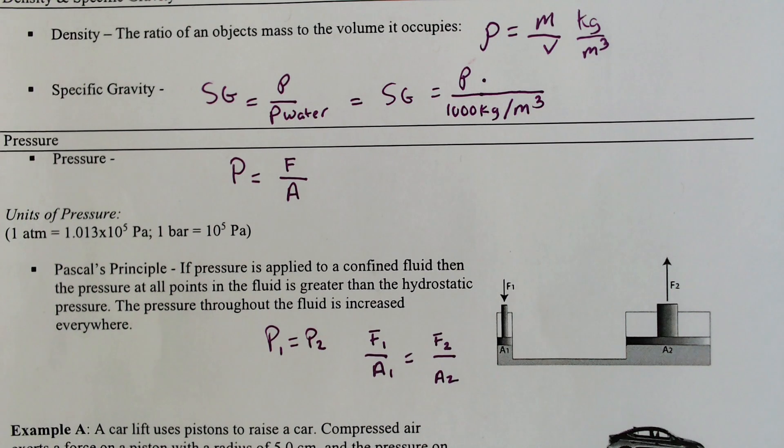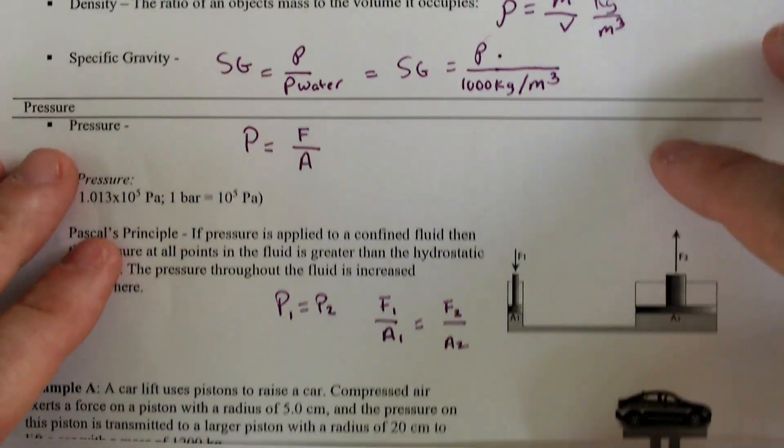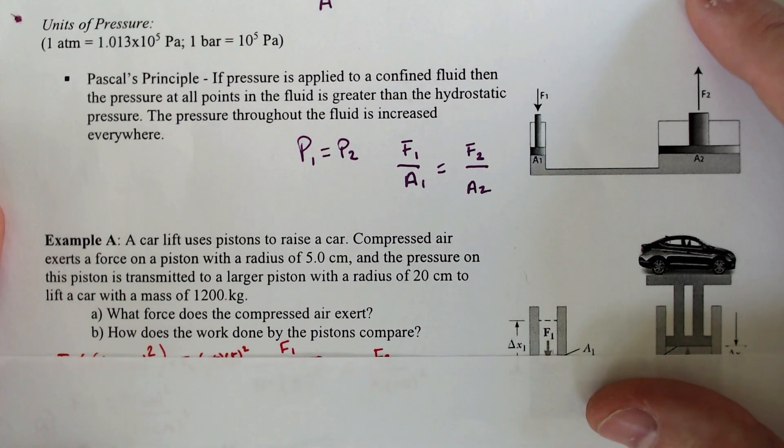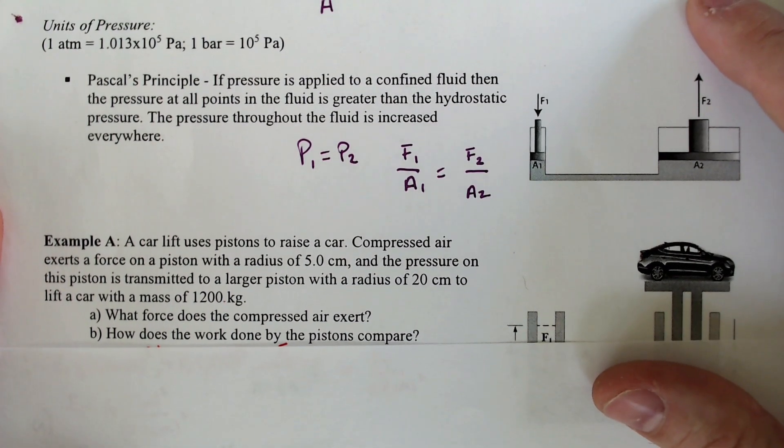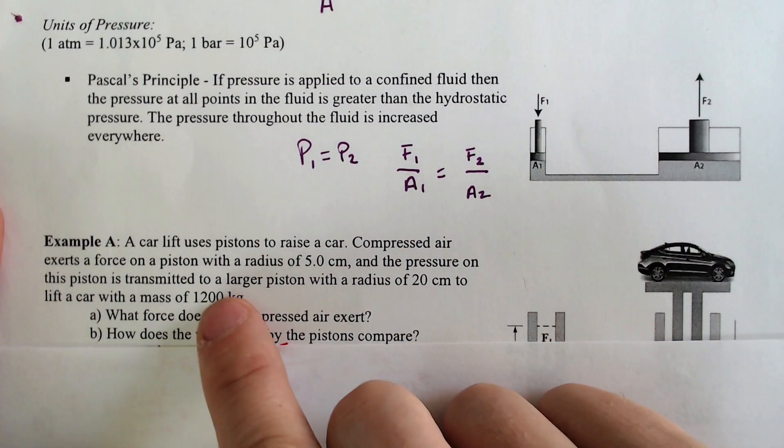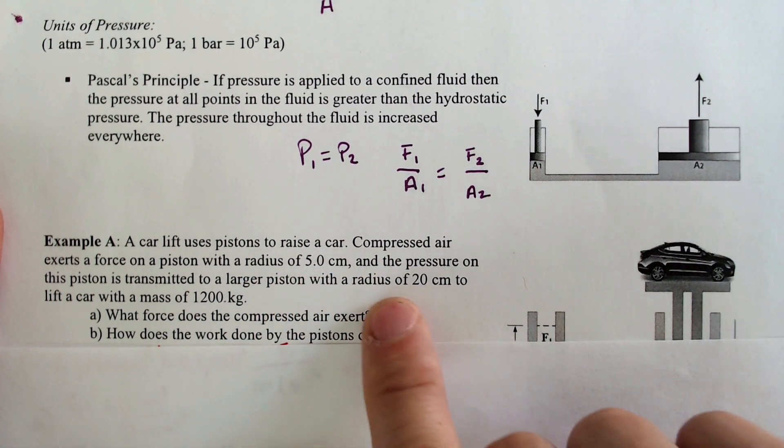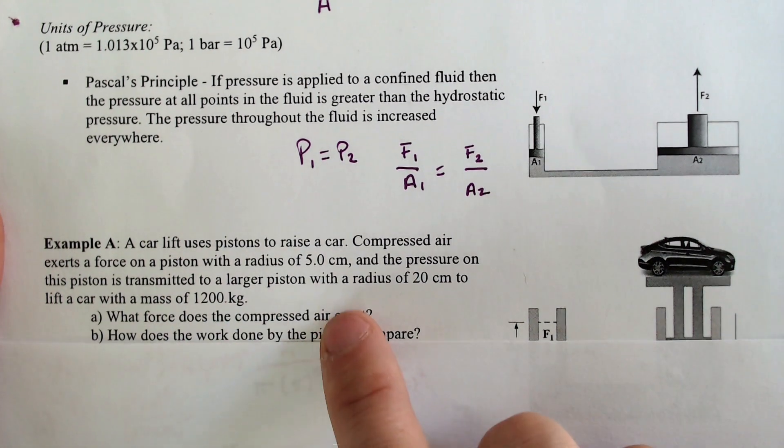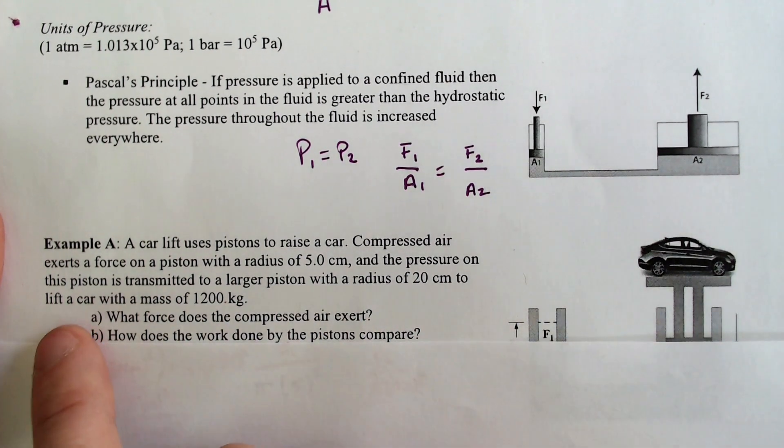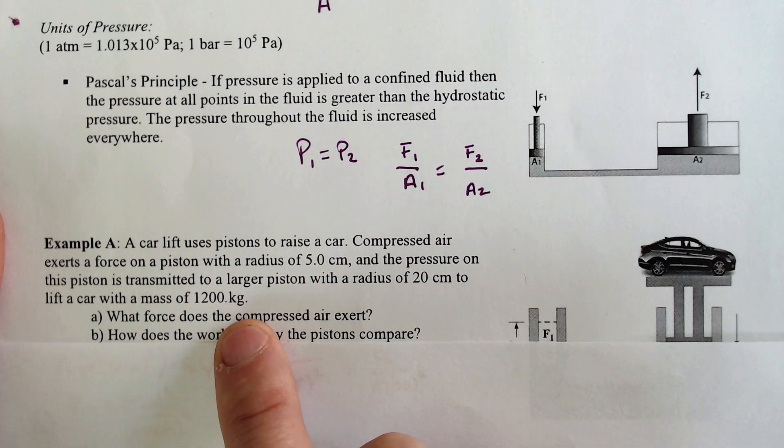We're going to do one example before we take a break for today. And that example is involving a hydraulic lift. We got a car lift using pistons to raise a car. Compressed air exerts a force on the piston with a radius of 5 centimeters, and the pressure on the piston is transmitted to a larger piston with a radius of 20 centimeters to lift a car that weighs 1,200 kilograms.